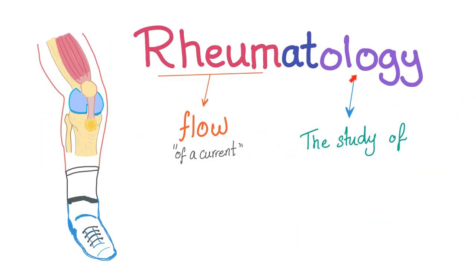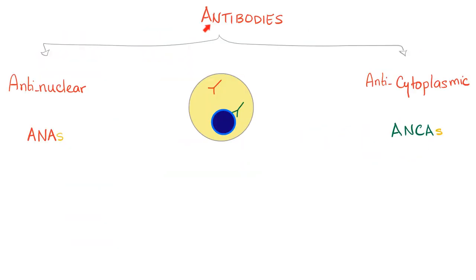This is a series on rheumatology. Autoantibodies are divided into anti-nuclear antibodies and anti-cytoplasmic antibodies. Anti-nuclear antibodies target the nucleus; anti-cytoplasmic antibodies target the cytoplasm.